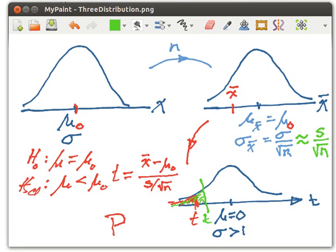If the T that we get ends up further away than that 5%, or whatever the significance level is, then we're going to reject the null hypothesis. If it's closer to the mean than that, then we're going to keep the null hypothesis.